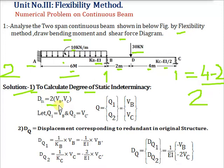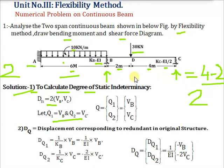The degree of static indeterminacy is 2. Let these be VB and VC — these are the redundant forces at locations B and C. If we remove these redundants, we can solve the structure using equilibrium equations alone, making it a determinate structure without disturbing its stability. Such forces are called redundants.